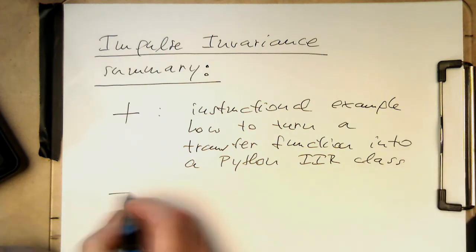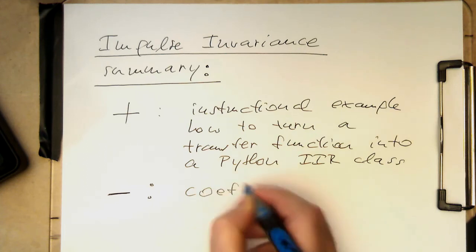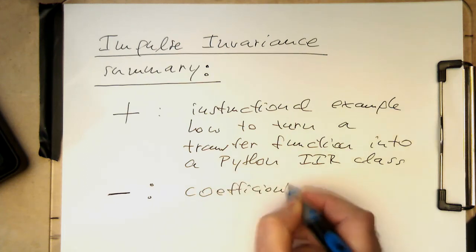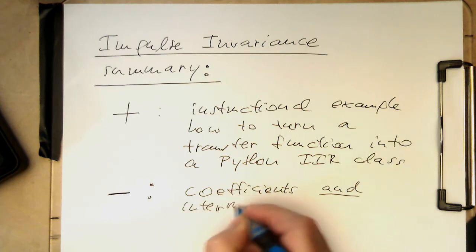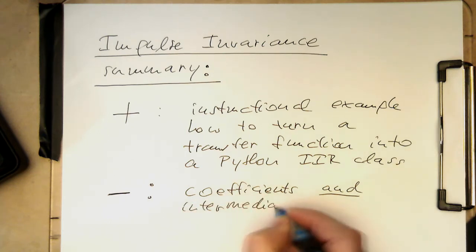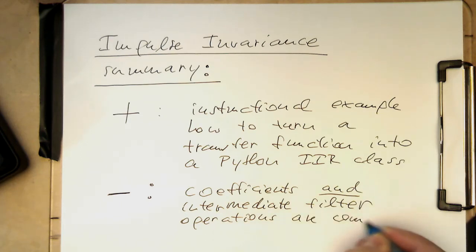But the big minus of the impulse invariance is that the coefficients and intermediate filter operations are complex valued.